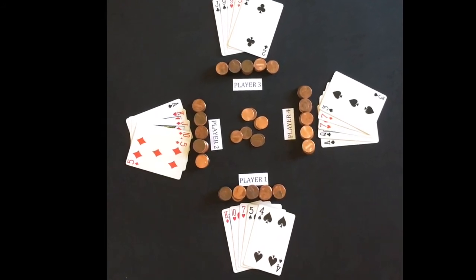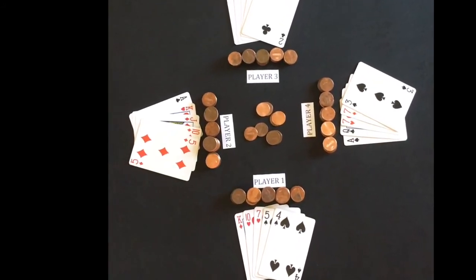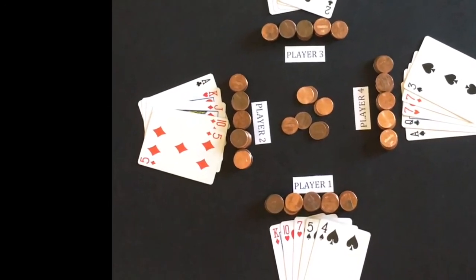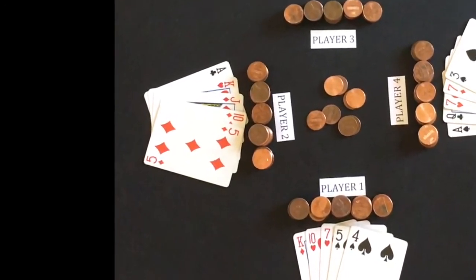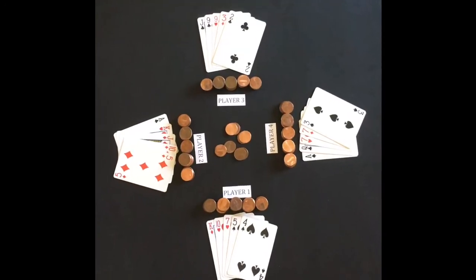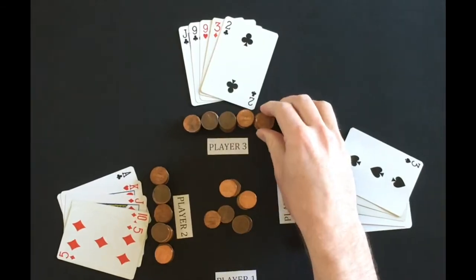Player 2 has 3 options: to bet an amount and add it to the middle pot, fold his hand, or check. Player 2 checks which means he is still in but does not want to add an additional bet. Player 3 has a pair of nines and decides to bet 2 pennies.